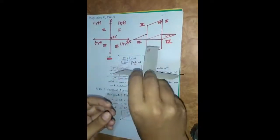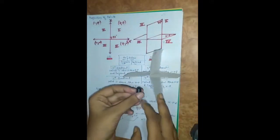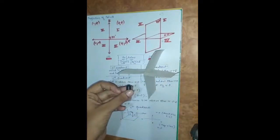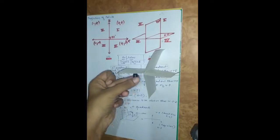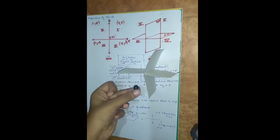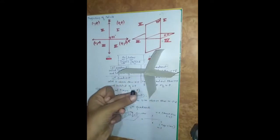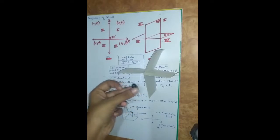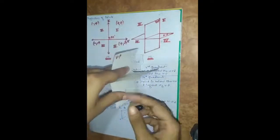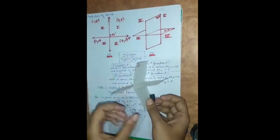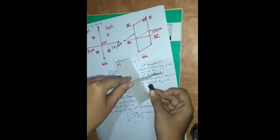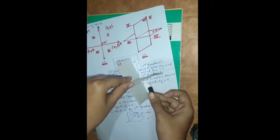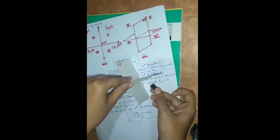If we consider a point in the third quadrant, we explain its position as: the point is below the HP and behind the VP. If the point is in the fourth quadrant, we explain its position as: the point is below the HP and in front of the VP.